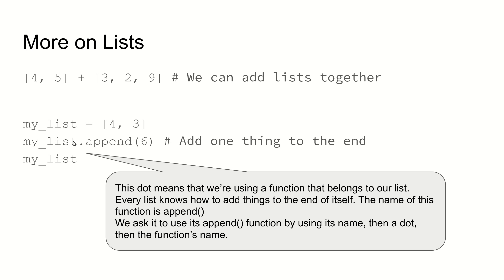What we're doing when we use that dot is we're asking our data in that variable if we can use some function that belongs to it to change the data in some way or to create something new. In this case, it changes the original list by appending 6 to the end of it.